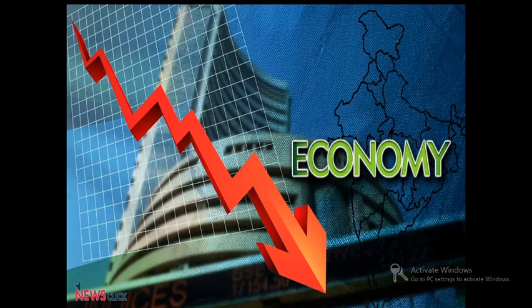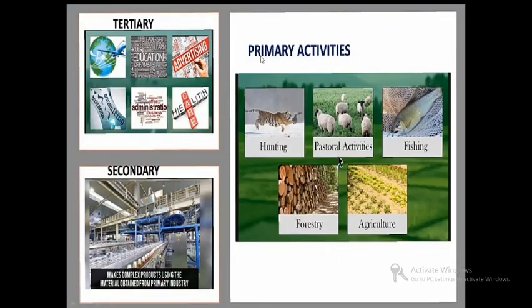We have three types of economic activities, which you have studied in Standard 8. They are primary activities, secondary activities and tertiary activities. We will just have a small recap. In primary activities, you will find hunting, agriculture, fishing, forestry, mining, etc. These are related to extraction and production of raw materials.